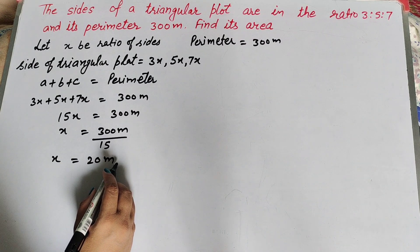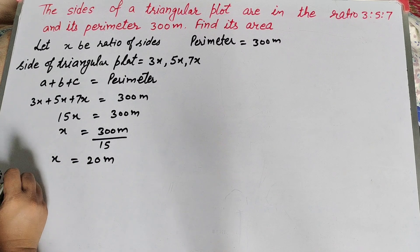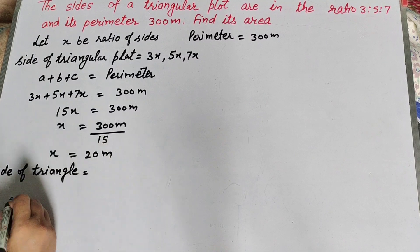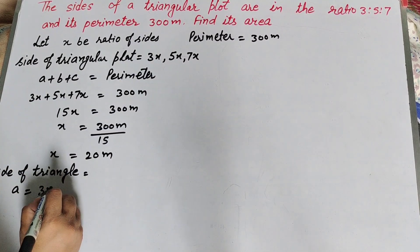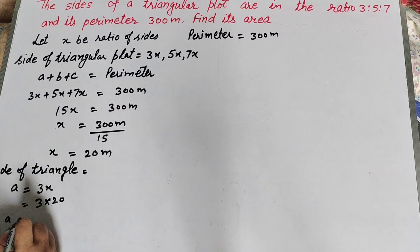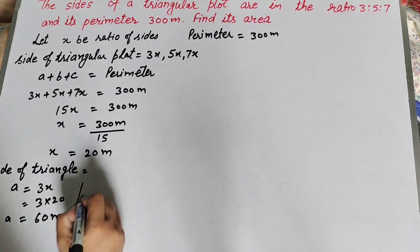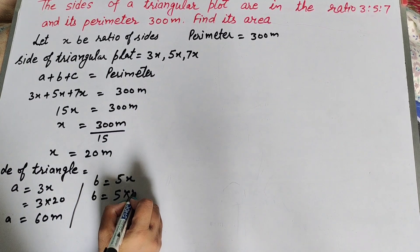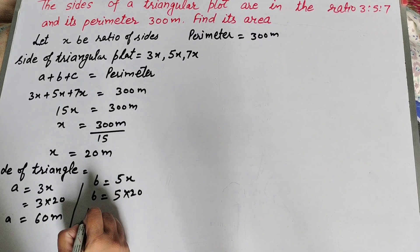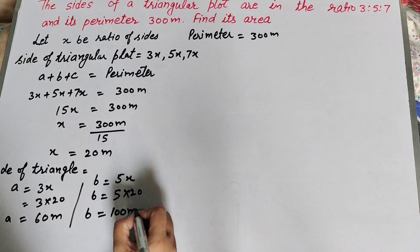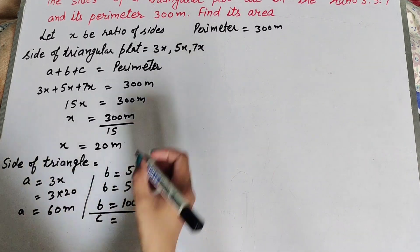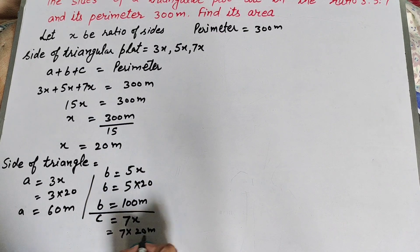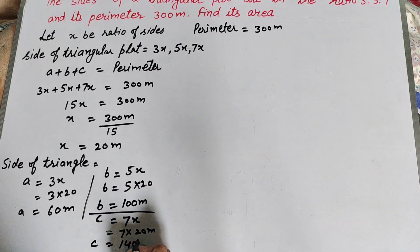Now we find the sides of the triangle. Side a = 3x = 3 × 20 = 60 meters. Side b = 5x = 5 × 20 = 100 meters. Side c = 7x = 7 × 20 = 140 meters.